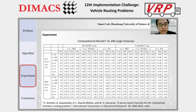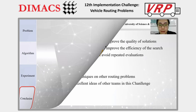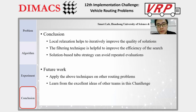Finally, we briefly review the conclusions of this study. Local relaxation helps to iteratively improve the quality of solutions. The filtering technique is helpful to improve the efficiency of the search. And the solution-based taboo strategy can allow avoiding repeated evaluations. In our future work, we plan to apply these techniques to other routing problems and learn from the excellent ideas of other teams in this challenge. That's all. Thank you.